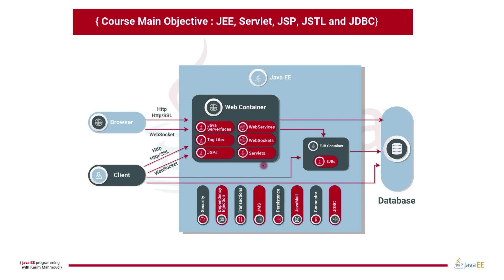This diagram shows the technologies and frameworks that exist in Java EE used to build web applications. In this course, we'll talk about Java EE architecture and technologies, then we'll have an introduction to web development. After that, we will learn about Servlet and JSP technologies in detail, with comprehensive examples covering JSP, Servlet, and JDBC that provide practical experience in web development.